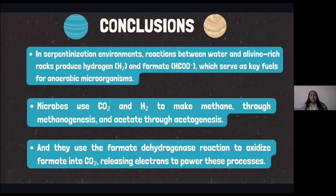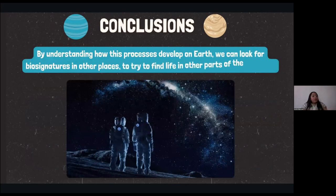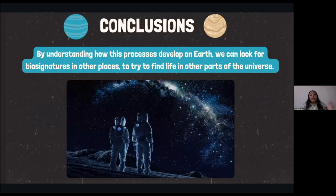The conclusions I came up with during this summer are: first, in serpentinization environments, the reactions between water and olivine-rich minerals produce hydrogen and formate that are essential fuel for anaerobic microorganisms. These same microorganisms are capable of using carbon dioxide and hydrogen to make methane through methanogenesis and acetate through acetogenesis, and they use the formate dehydrogenase reaction to oxidize formate into CO2, releasing electrons to power these other processes. So everything is interconnected. By understanding how these processes develop on Earth, we can look for biosignatures in other places to try to find life in other parts of the universe.